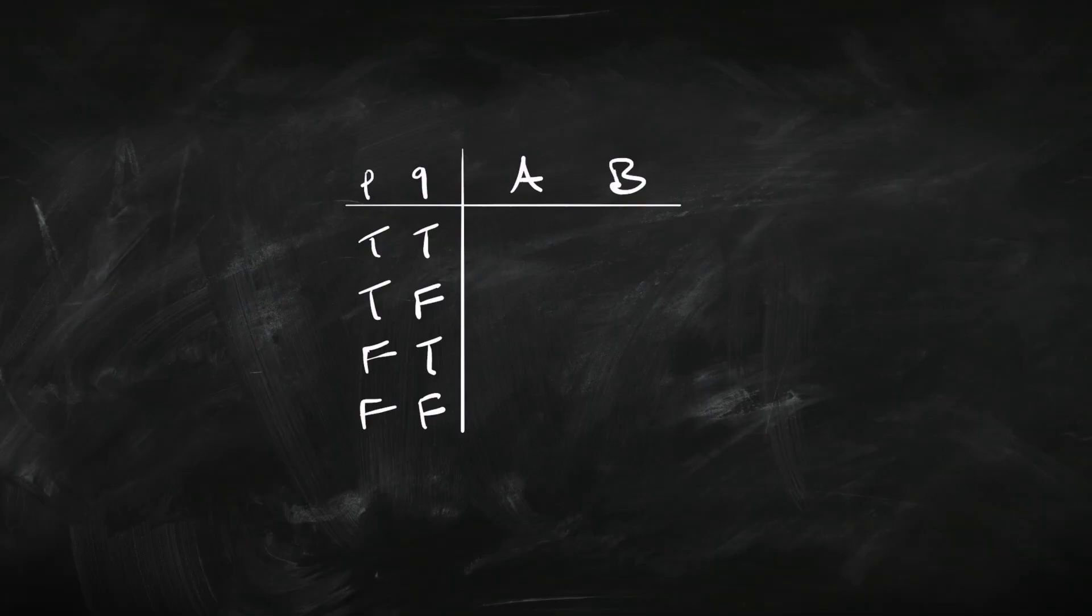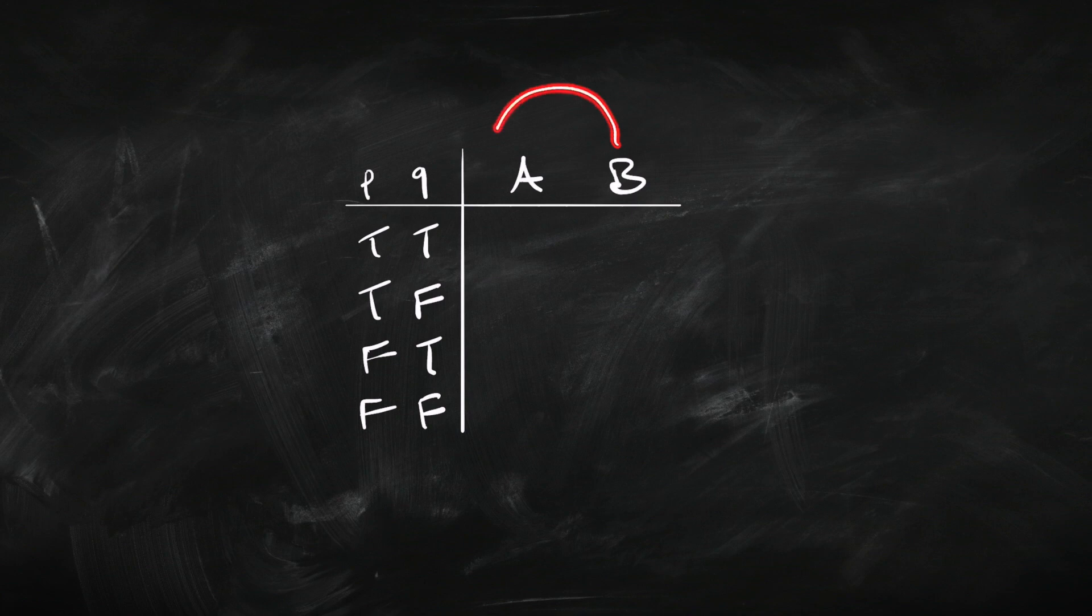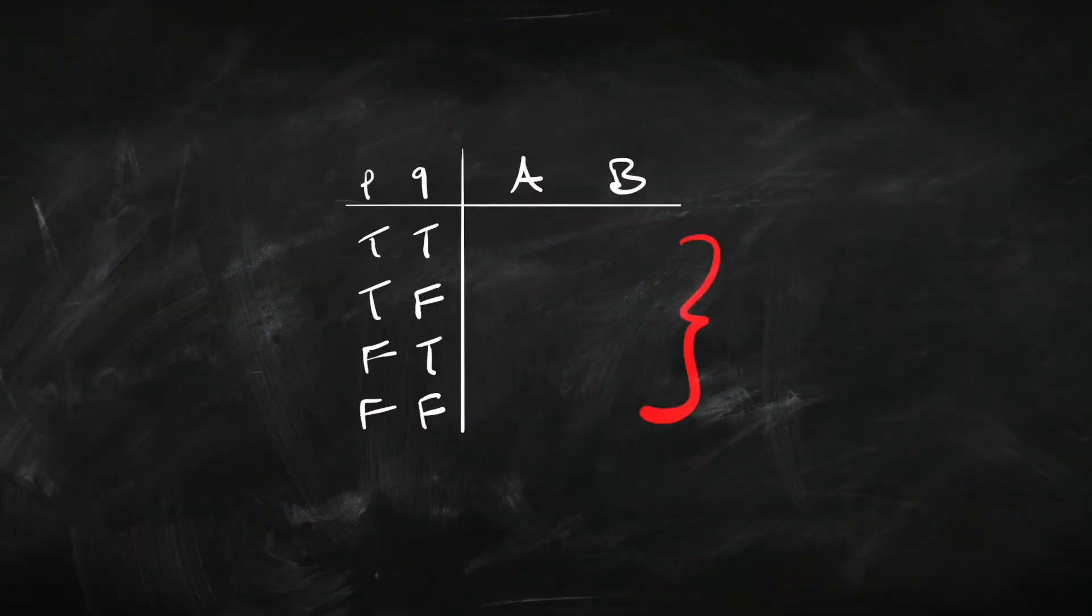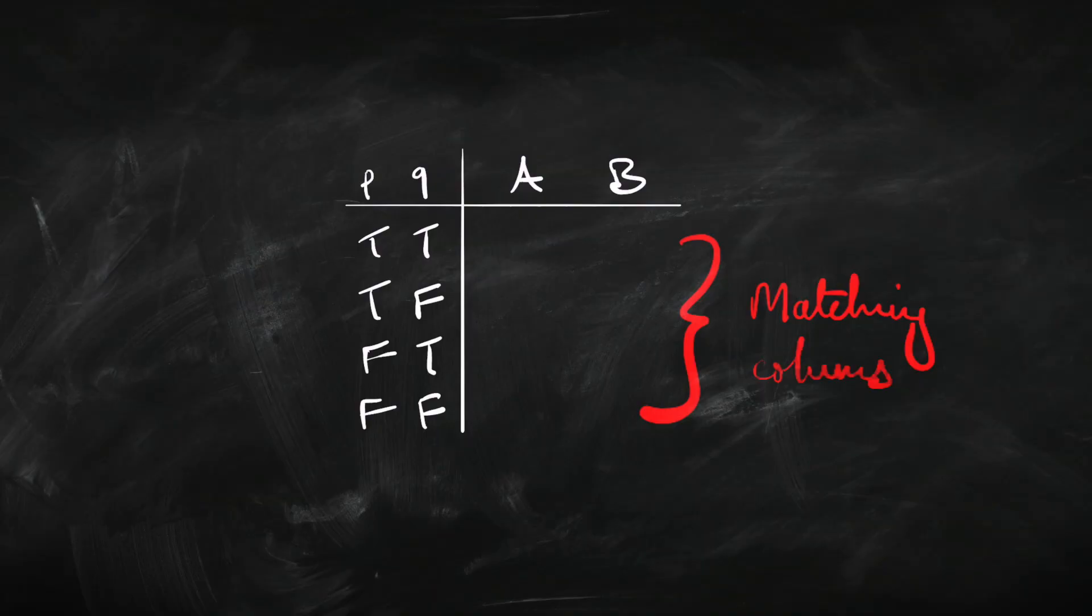How would we use a truth table to work out whether A and B are equivalent? We could just use the definition and go the long way around - first see if A entails B and then see if B entails A. But actually, there's a much shorter way. All we need to do is check whether A and B have matching columns. Logical equivalence means that the truth table for A is exactly the same as the truth table for B. In every line, if there's a T for A, there's got to be a T for B. And if there's an F for A, there's got to be an F for B.